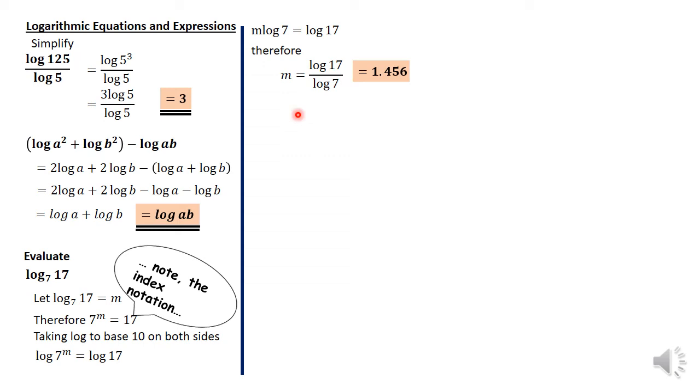Using your calculator, you type in log 17, and whatever answer you get, you divide by log 7. And that's the answer.